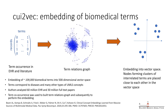The CUI-2VEC resource was developed by a team at Harvard University by analyzing massive amounts of medical documents, such as electronic health records, medical notes, insurance claims, and medical papers. A word embedding algorithm was employed to generate embeddings of over 100,000 medical terms into a 500-dimensional vector space.